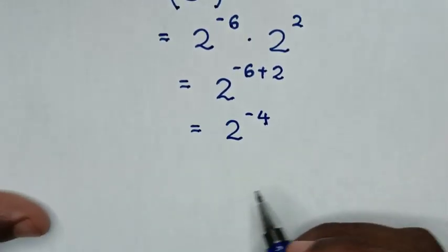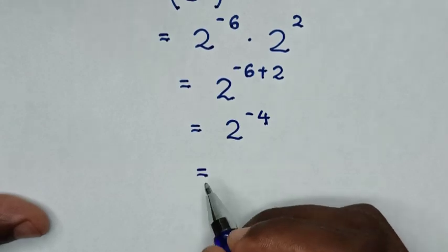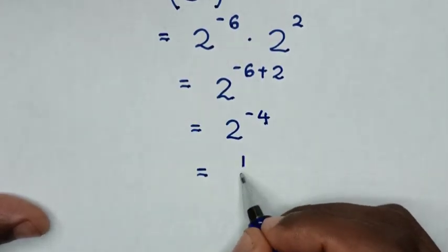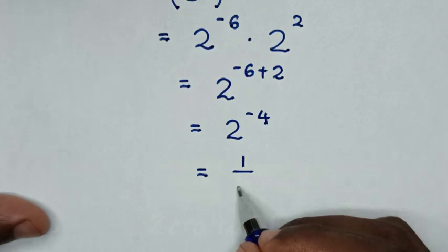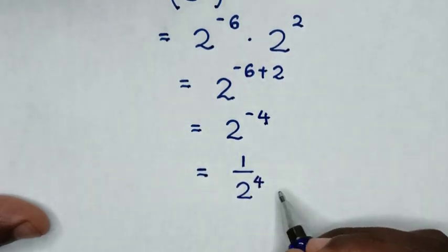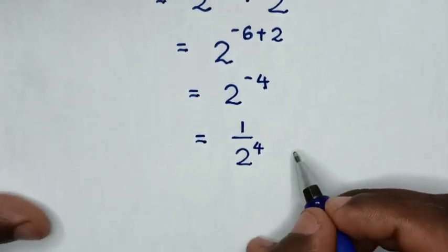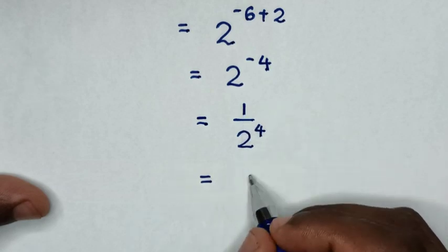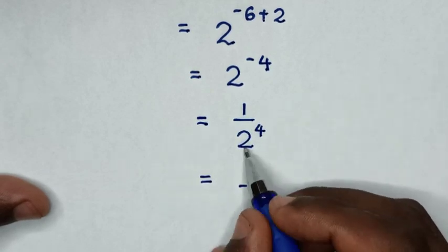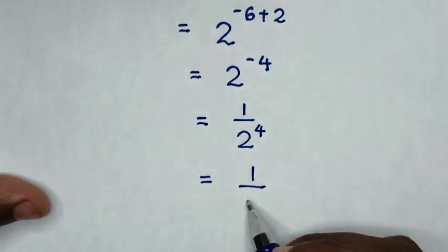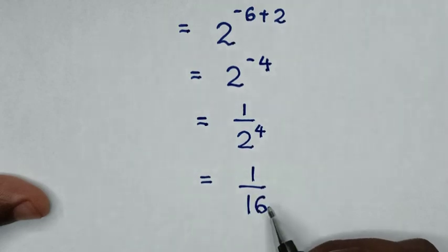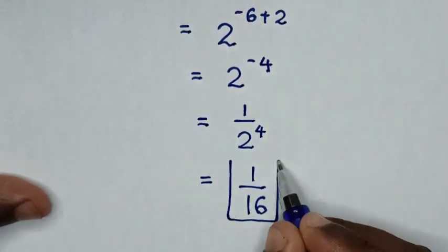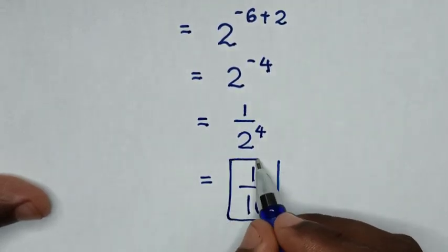Then, it will be equal to: a negative power means 1 over 2 power of 4. And 2 power of 4 is 16, so 1 over 16 is our final answer. Thank you for watching.